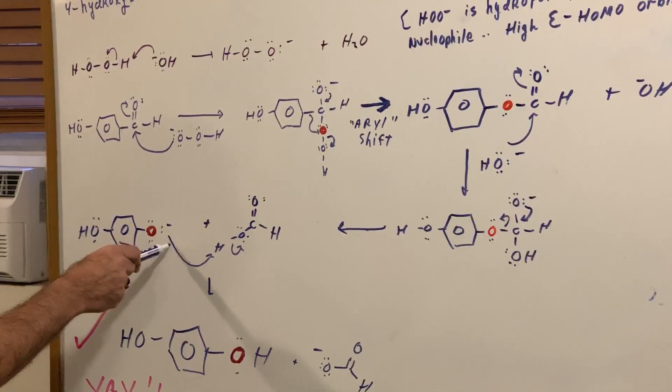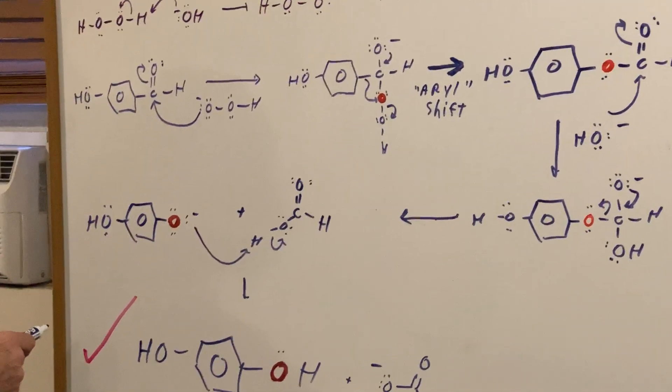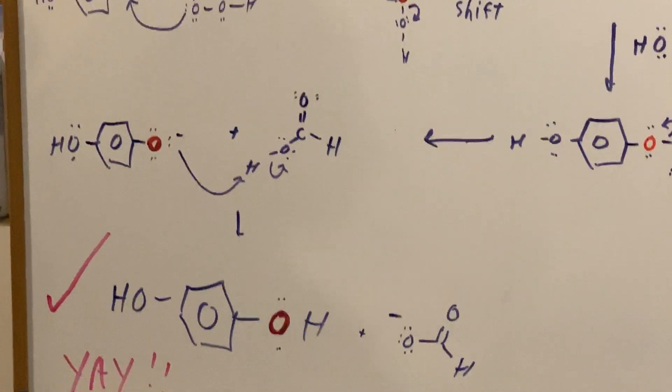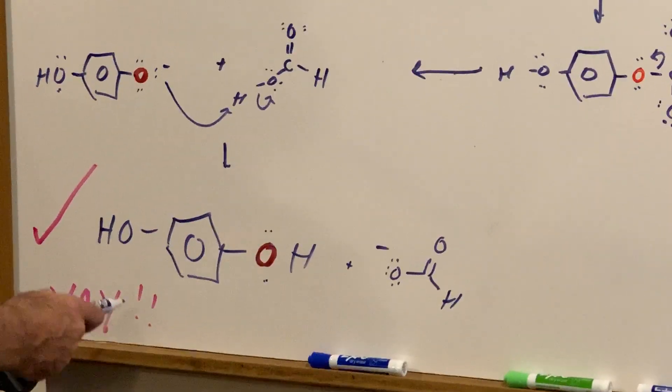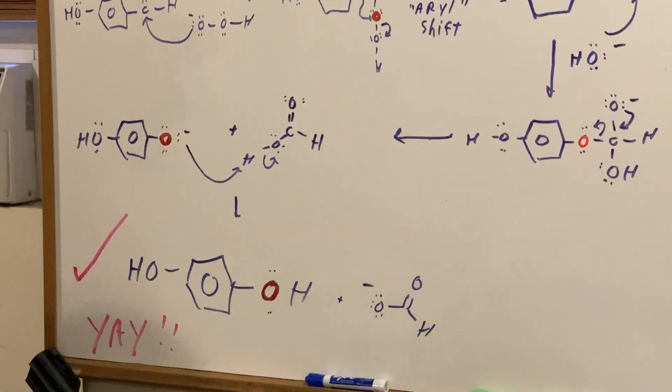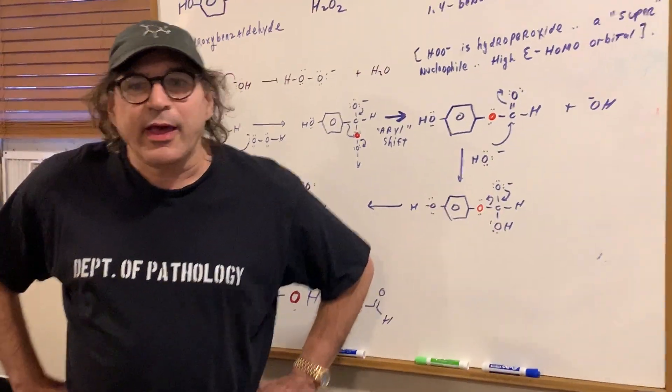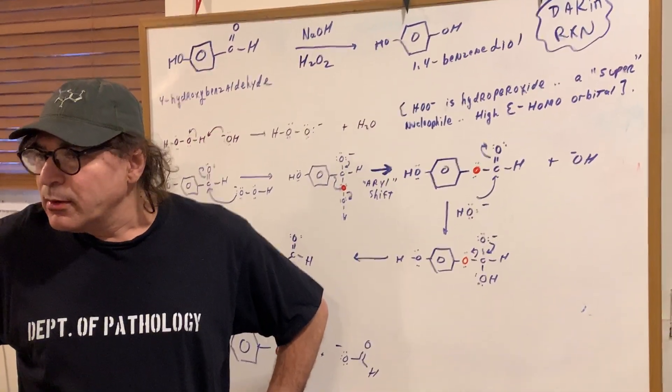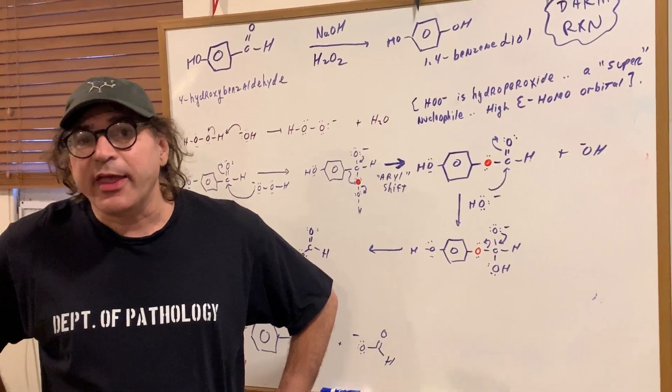And then the last step, we simply deprotonate the formic acid, and we get formate anion, and there's our 1,4-benzenediol. Overkill? Maybe. We love overkill, though. We love to hit hard.